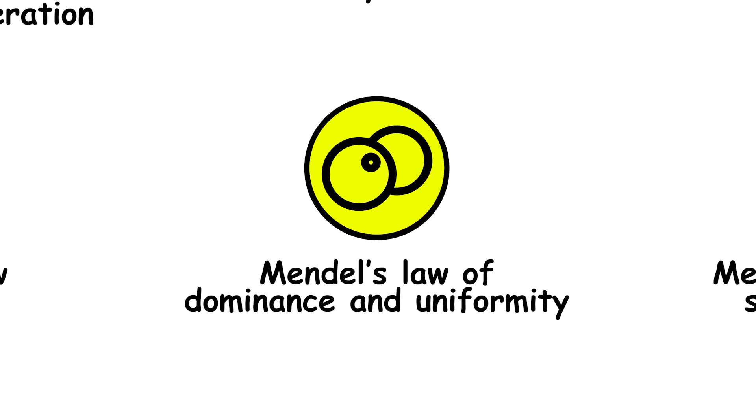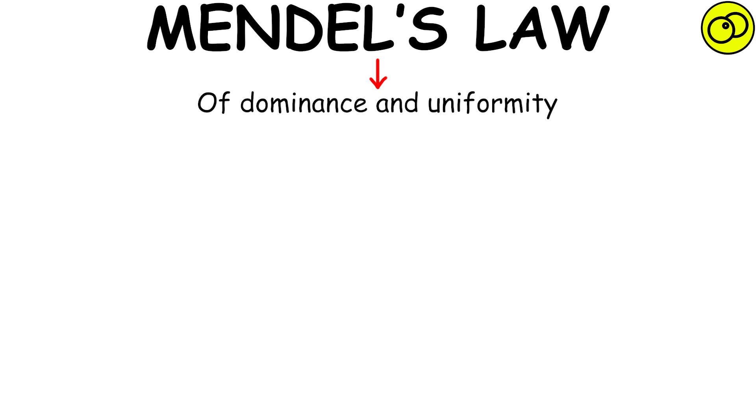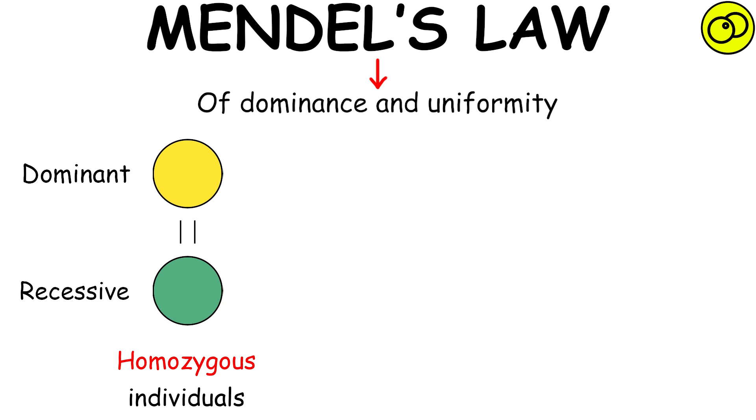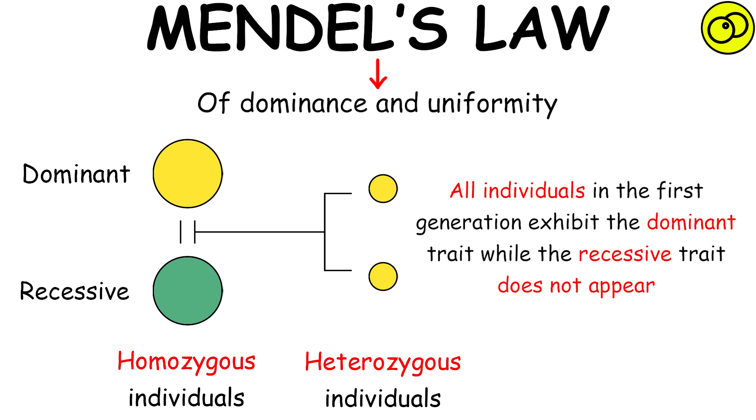Mendel's Law of Dominance and Uniformity states that crossing two homozygous individuals for a trait where one is dominant and the other is recessive results in a first generation of heterozygous individuals. All individuals in the first generation exhibit the dominant trait, while the recessive trait does not appear.